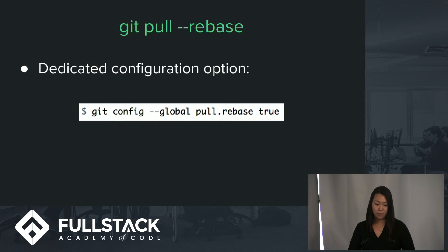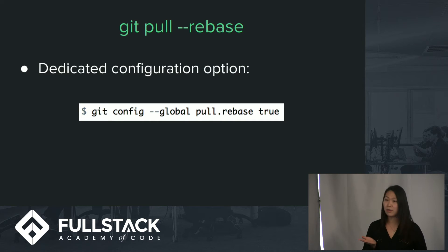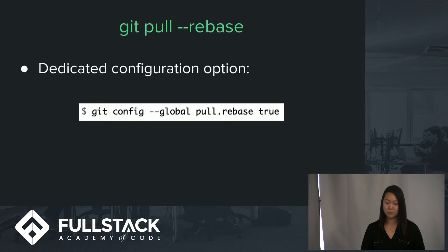Pulling with rebase is such a common workflow that there's actually a dedicated configuration option for it. If you type that into your terminal, it'll add it to your global git config file, and then every time you pull from that point on, it'll just do a rebase instead of a merge.